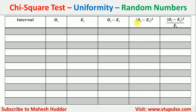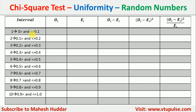We have 10 intervals and 100 total examples, so we divide the 100 examples into 10 intervals. The first interval covers numbers greater than 0 and less than or equal to 0.1. The second covers numbers greater than 0.1 and less than or equal to 0.2, and so on. The last interval covers numbers greater than 0.9 and less than or equal to 1.0.